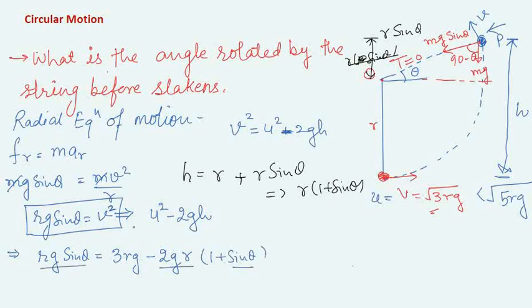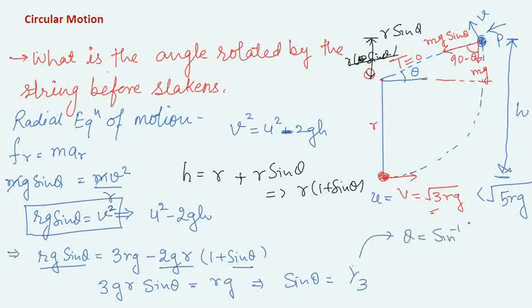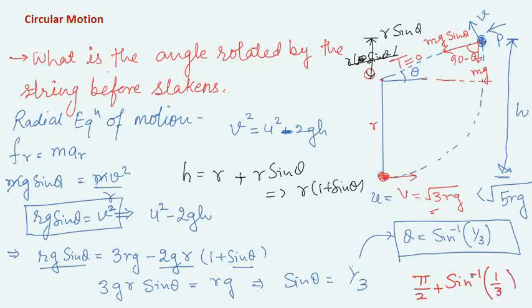Expanding: rg·sinθ = 3rg − 2rg − 2rg·sinθ, so rg·sinθ + 2rg·sinθ = rg, giving 3rg·sinθ = rg, which implies sinθ = 1/3. Therefore θ = sin⁻¹(1/3). The total angle rotated by the string before it slackens is π/2 + sin⁻¹(1/3). That is the answer for this problem.